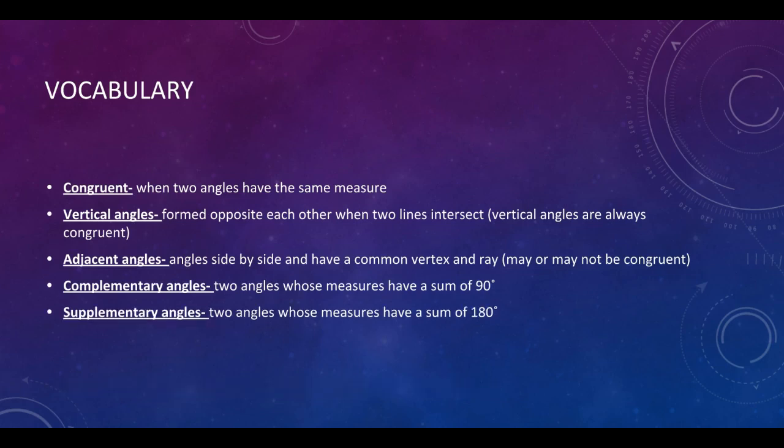And then finally, supplementary angles are two angles whose measures have a sum of 180 degrees. And I think I've talked a little bit about that in class, that a straight line is a straight angle. That's 180 degrees. So two supplementary angles, when you add them together, form a straight line, and that's 180 degrees.